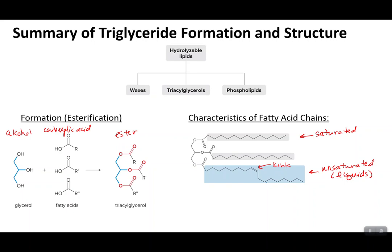There are two ways to classify fatty acids. The omega-N classification numbers the chain from the tail end; for example, if the first double bond is at carbon 9 from the end, it is omega-9. The lipid number description uses C:D notation — the number of carbons colon the number of double bonds; for an 18-carbon chain with one double bond, that is 18:1. In a separate video, we will talk about the hydrolysis of triglycerides, because since a triglyceride is an ester, it undergoes the same hydrolysis reactions we have already covered in organic chemistry.